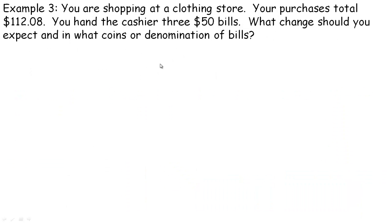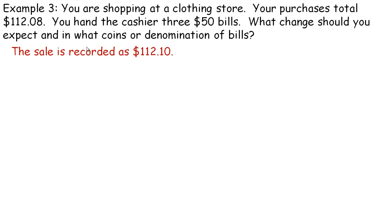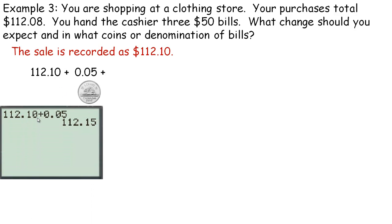Example three: you're shopping at a clothing store. Your purchases total $112.08 and you hand the cashier three fifty dollar bills. The question is: what change should you expect and in what denominations? The sale would be recorded as $112.10, because eight cents is closer to ten cents than to five — it's only two cents from ten but three cents from five. Start counting change from $112.10, first adding a nickel to reach $112.15.